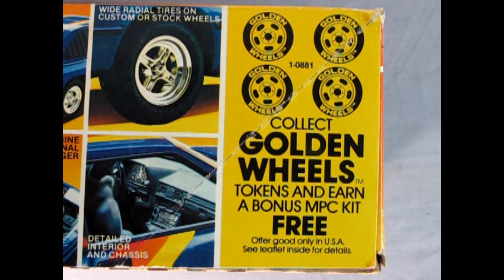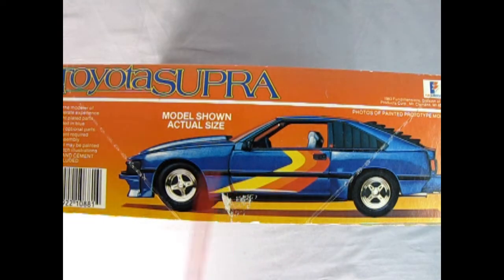And with this model kit of this era, we also had the golden wheels. You collected the golden wheels, cut them out and sent the tokens over to MPC, and you received a bonus MPC model kit absolutely free. On this side of the box, we get a showing of the model in the actual size. It says for the modeler of moderate experience, bright plated parts molded in blue, many optional parts, cement required for assembly. This is also a Fun Dimensions kit which came out in 1983.